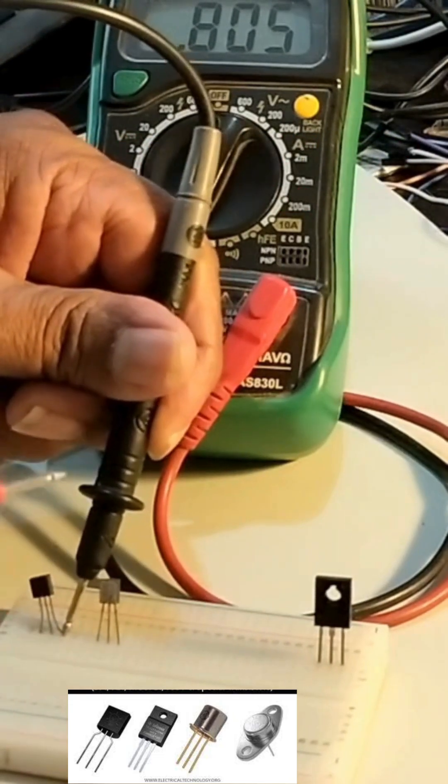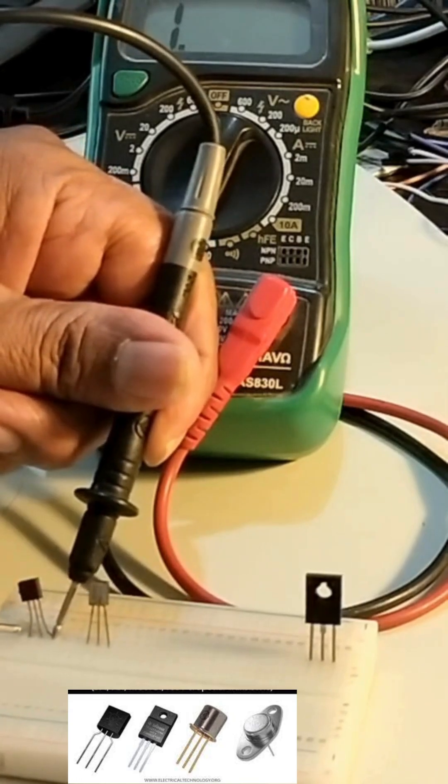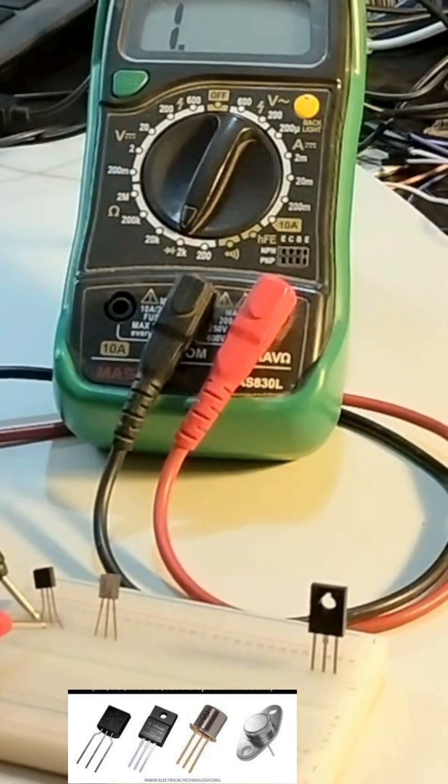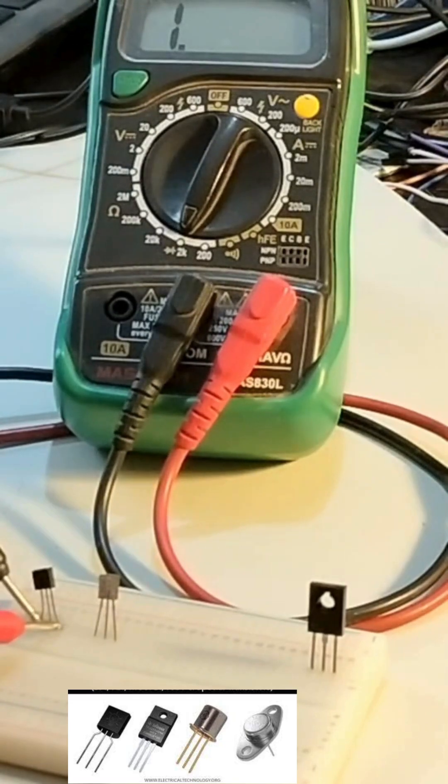So finally, I will tell you that the first and the last pin also you can check. Right? This will tell you whether there is a leakage in the transistor that is in collector and emitter. So, how we got it?